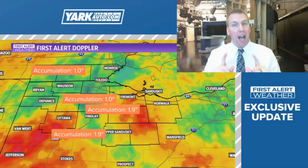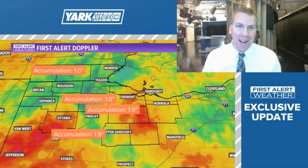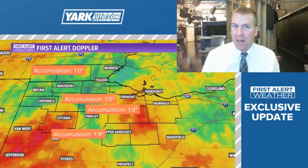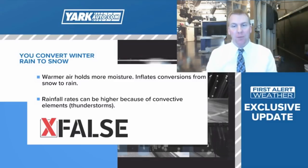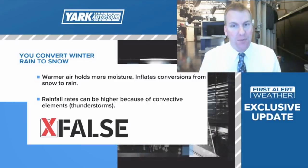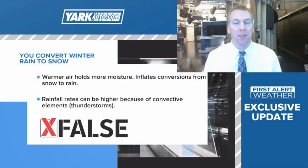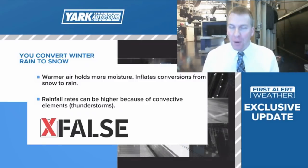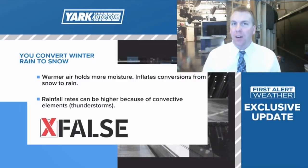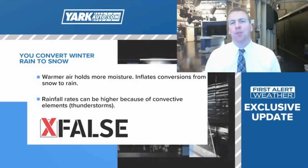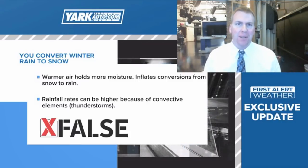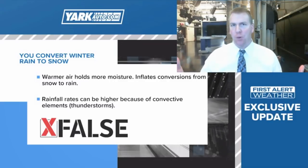That is the common conversion. However, we cannot go in reverse. You can't say because we had one inch of rain, we would have had 10 inches of snow. The reason why — we're calling this one a First Alert Verify, and we can say false for this one. If people ask, you can't convert winter rain to snow. Warmer air has the capability of holding more moisture, and that inflates the conversion from rain to snow — it basically blows it out of proportion.